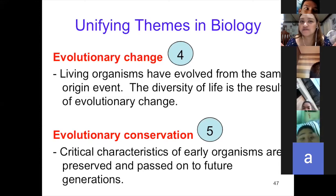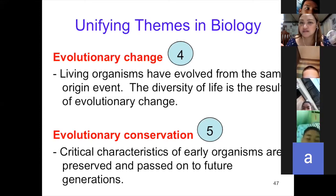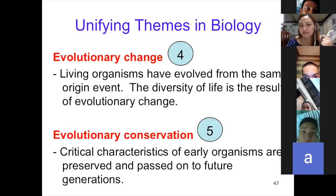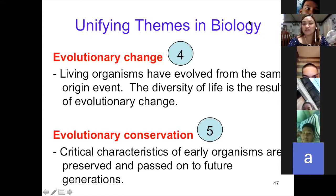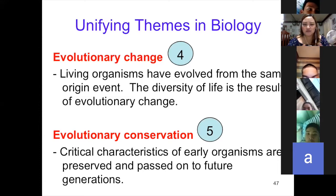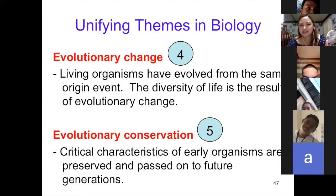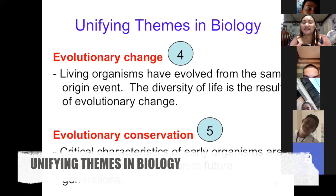When we say evolutionary conservation, this is when changes are preserved and passed down to the next generation. For example, if your family has a sharp nose, the next generation will likely also have it. But there will always be recessive genes — that's why in a family of brainy people, there may be one who seems slower. There will always be a recessive gene; that's part of evolutionary conservation.